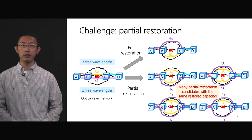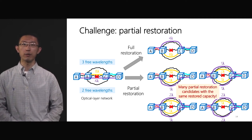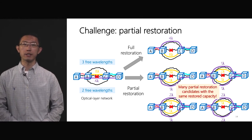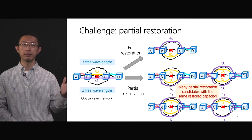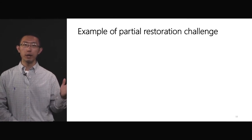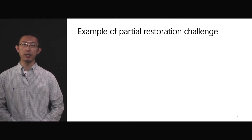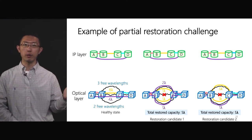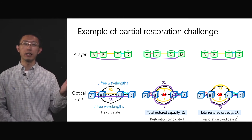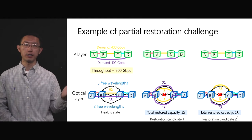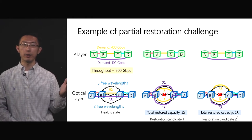Let us consider a partial restoration scenario where we can only restore three wavelengths on the top fiber and two wavelengths to the bottom fiber. In this case, there are many partial restoration candidates, all achieving the same amount of restored capacity on the optical layer. For WAN operators, when multiple restoration candidates restore the same amount of capacity, they care more about which candidate can actually satisfy more traffic demands on the IP layer. For example, IP link AD is carrying 100 Gbps demand, and IP link BC is carrying 400 Gbps demand. In healthy state, the network throughput is 500 Gbps.